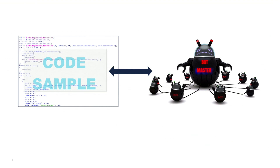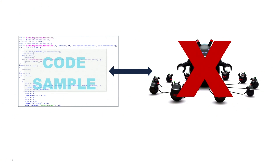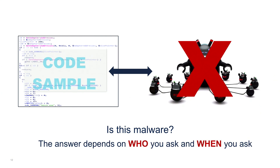Let me give you an example. Suppose you have code that connects to an external command and control server and does something malicious — most of us would consider this malware. Now suppose over an extended period of time, the bot master disappeared. So now this code tries to connect to an inactive IP address and does nothing malicious. Is this still malware? As it turns out, the answer depends on who you ask and when you ask it.